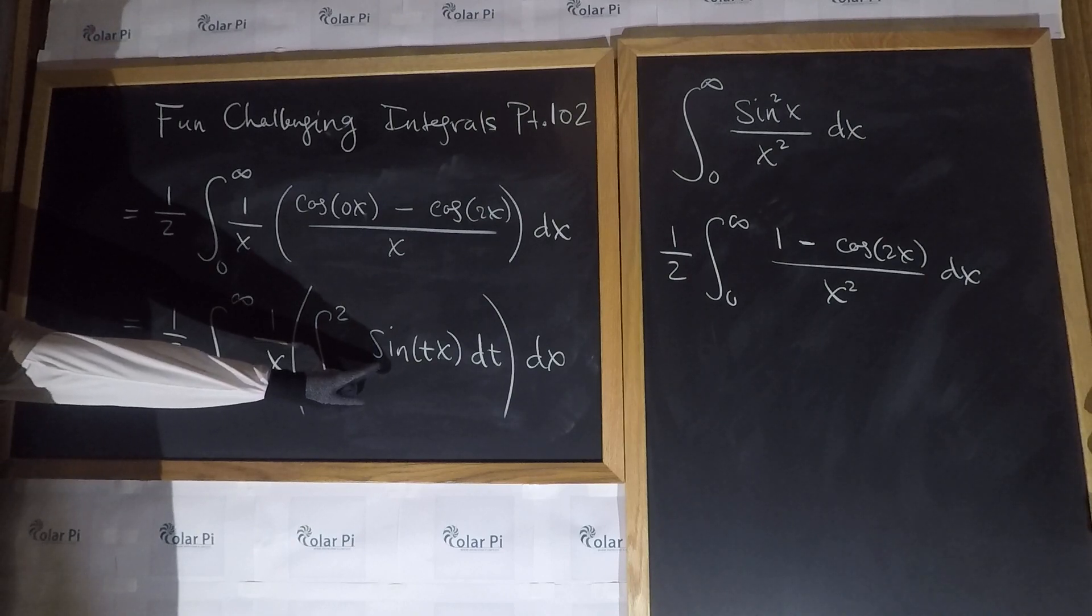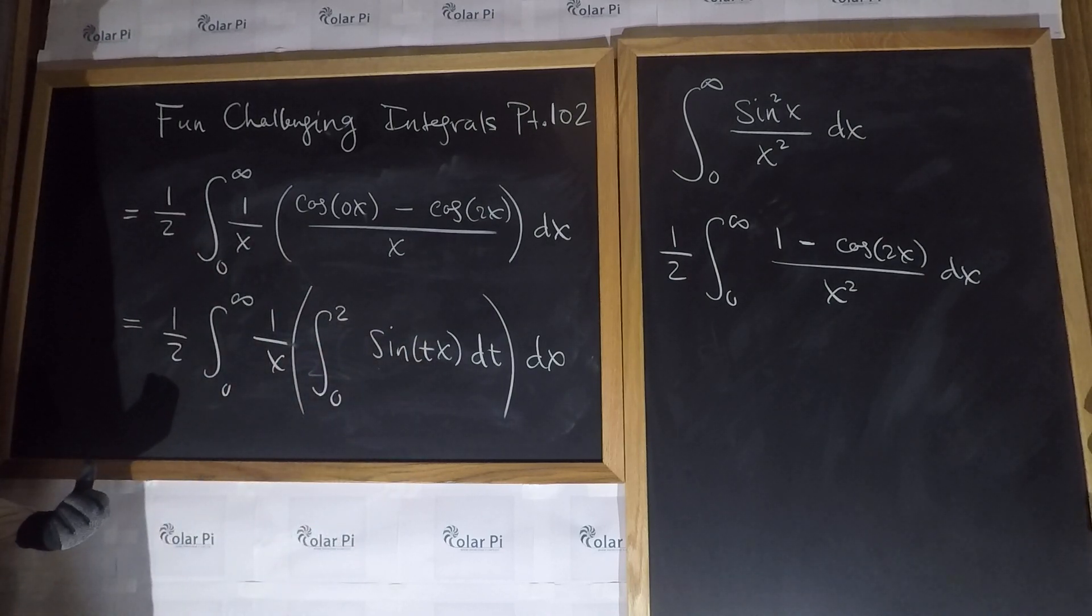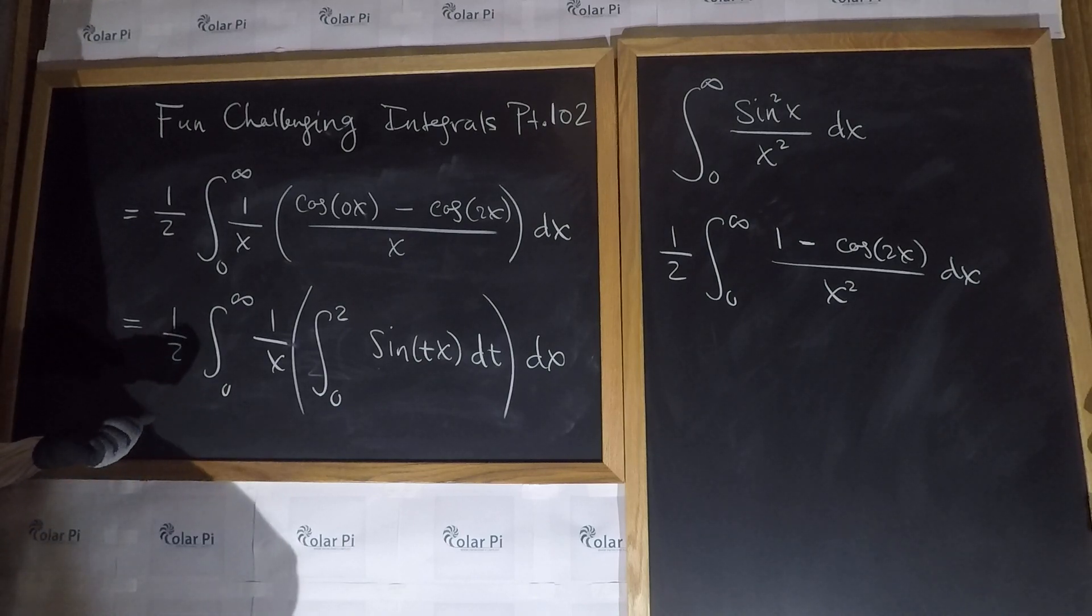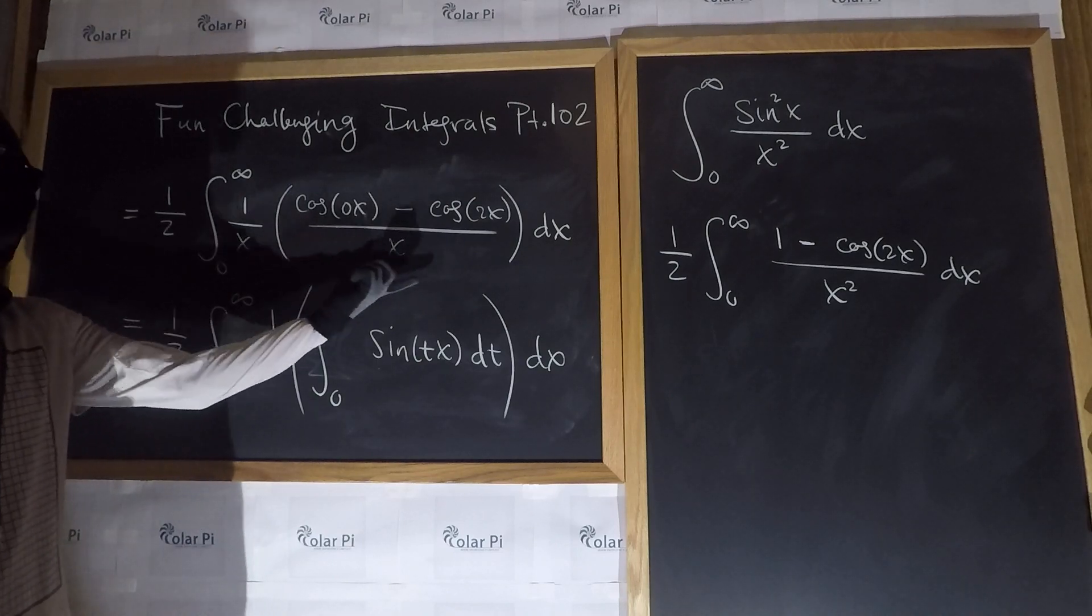So, the anti-derivative of sine tx is going to be negative cosine tx. And, if you evaluate negative cosine tx from 0 to 2, you will get exactly what I have here.